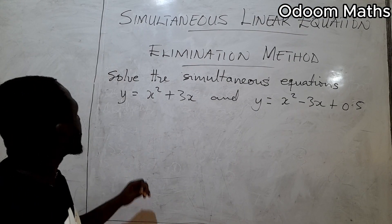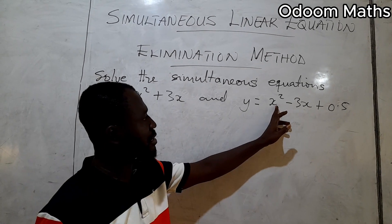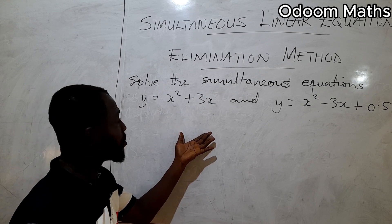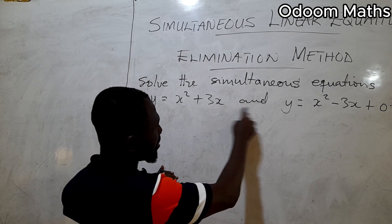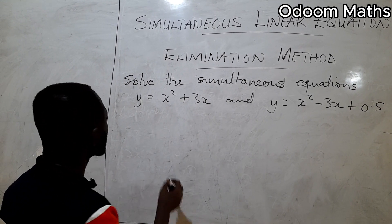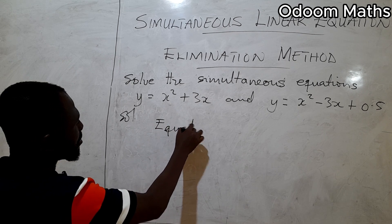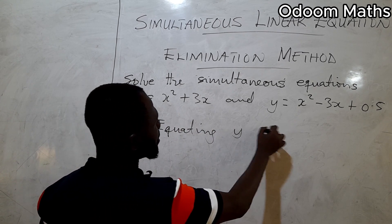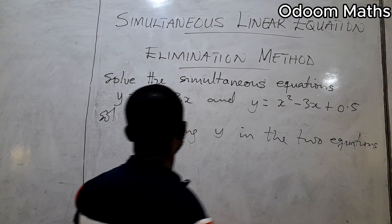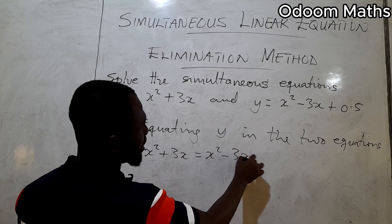Let's look at another example: solve the simultaneous equations y equals x squared plus 3x, and y equals x squared minus 3x plus 0.5. Since both expressions equal y, we can equate them: x squared plus 3x equals x squared minus 3x plus 0.5.